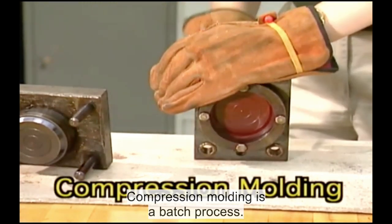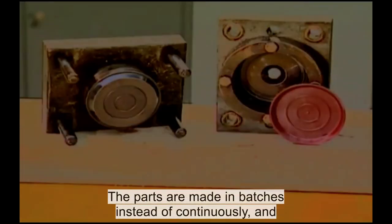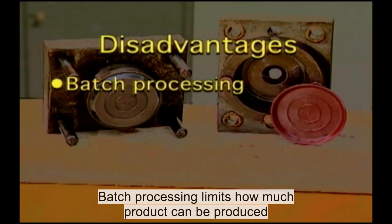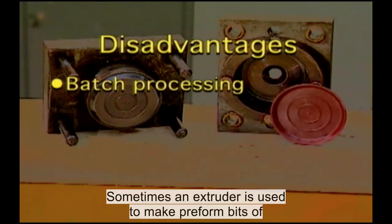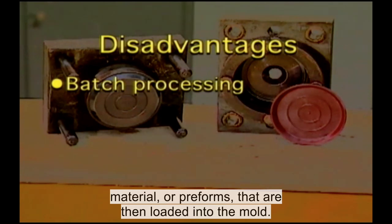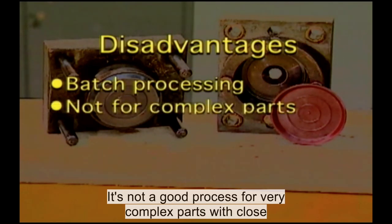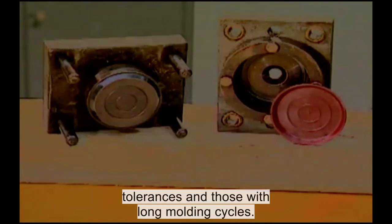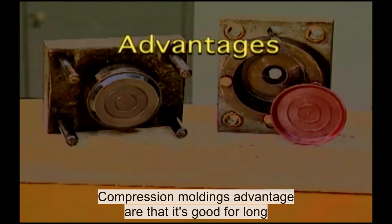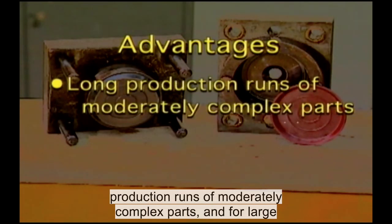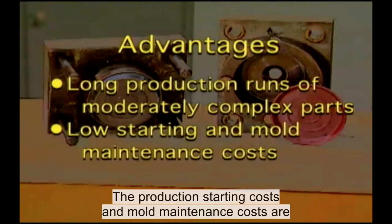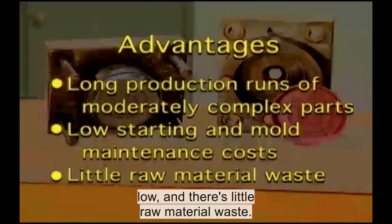Compression molding is a batch process. The parts are made in batches instead of continuously, and that's its biggest drawback. Batch processing limits how much product can be produced in an hour. Sometimes an extruder is used to make preformed bits of material, or preforms, that are then loaded into the mold. It's not a good process for very complex parts with close tolerances and those with long molding cycles. Compression molding's advantages are that it's good for long production runs of moderately complex parts and for large, bulky parts. The production starting costs and mold maintenance costs are low as there's little raw material waste.